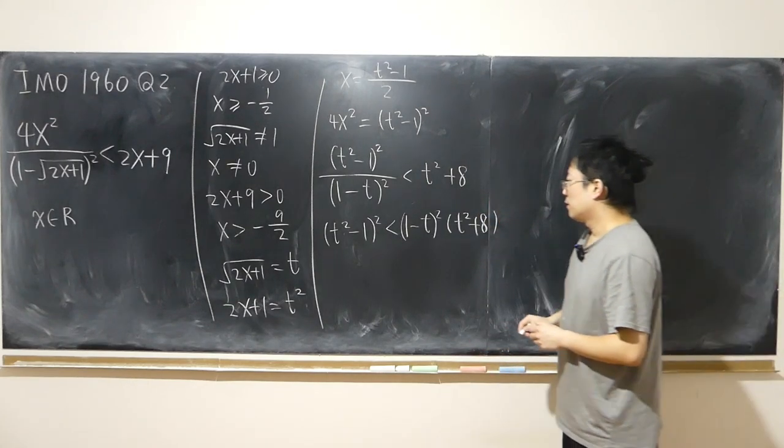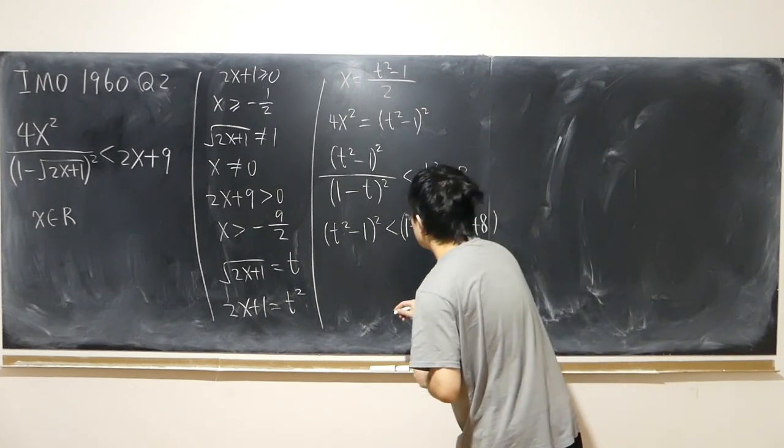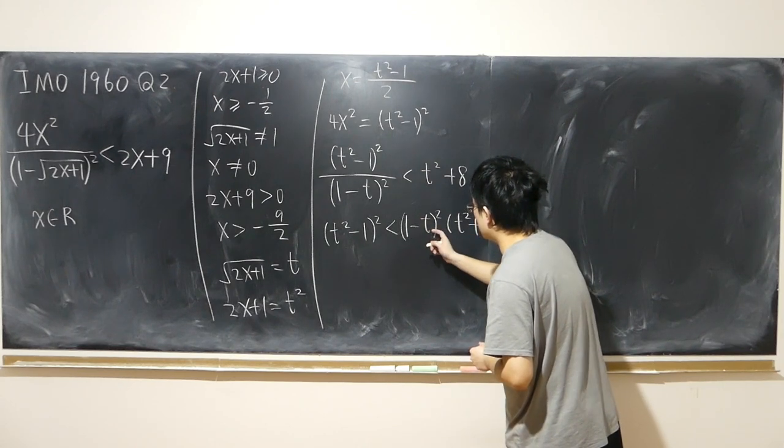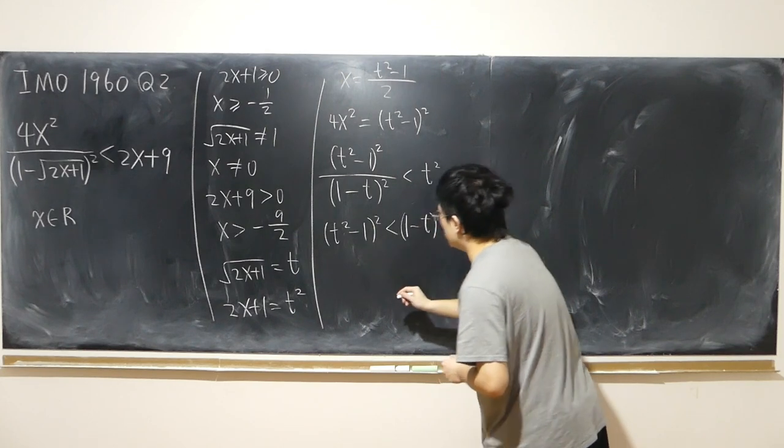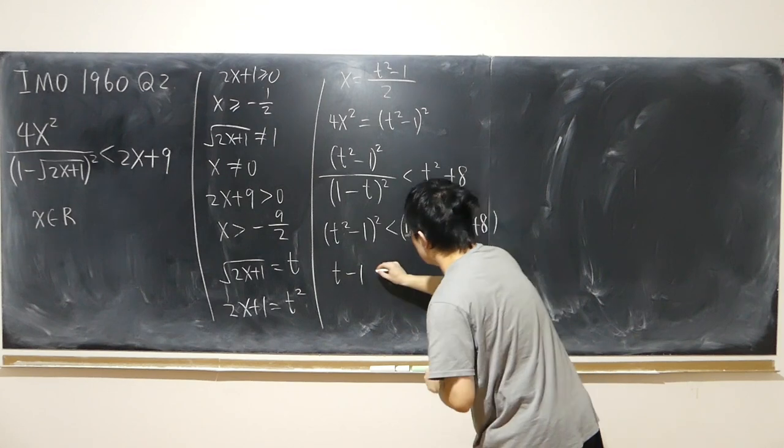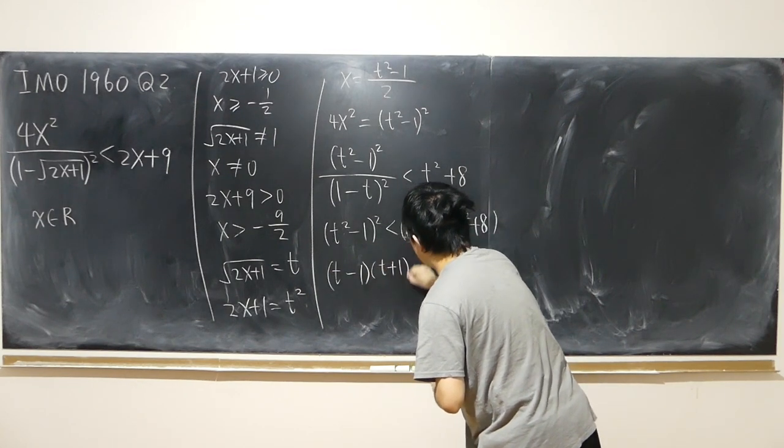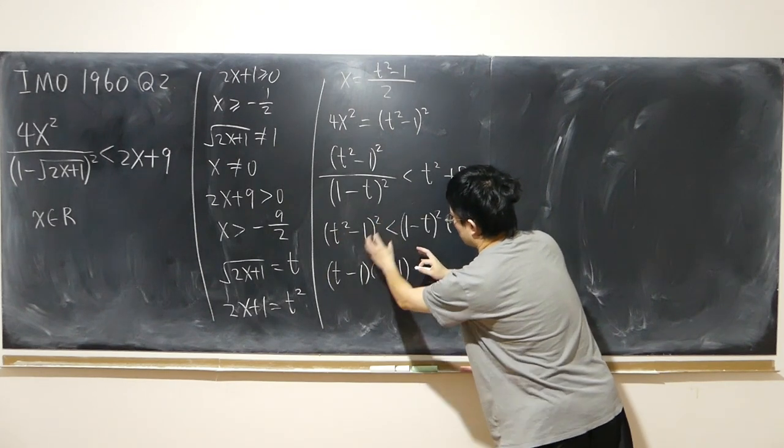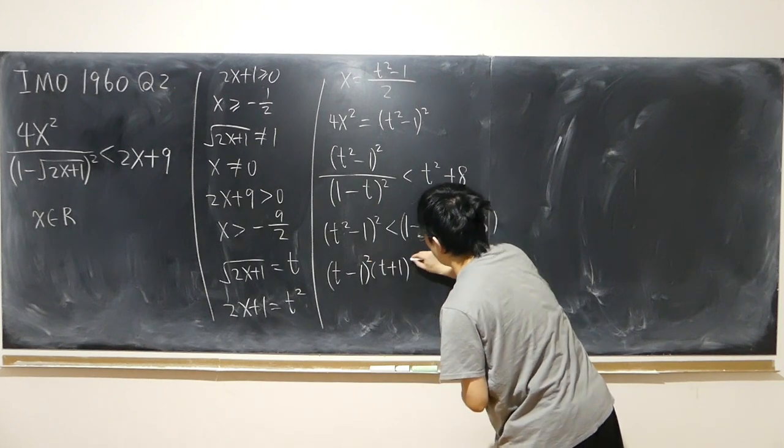All right. So it looks like we can have a common factor, which is 1 minus t quantity squared. If I rewrite this into t minus 1 times t plus 1. Then this inside, this quantity squared. So distribute the square onto this and that. Square, square.